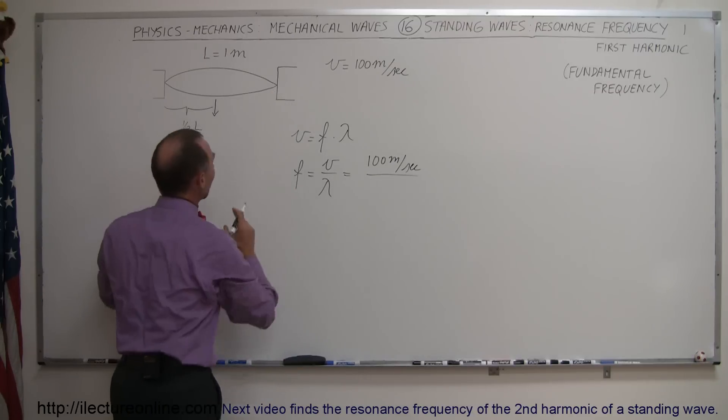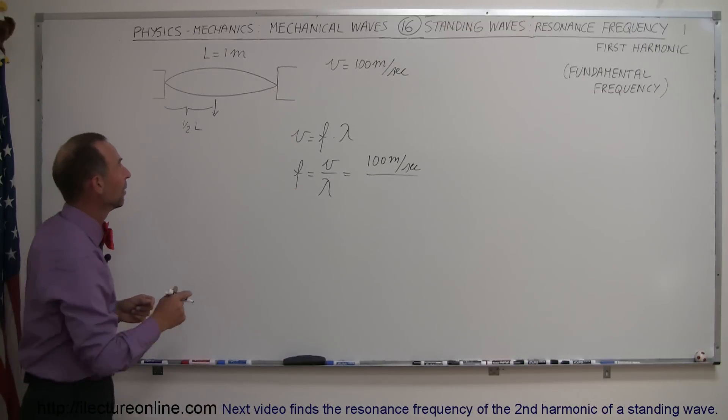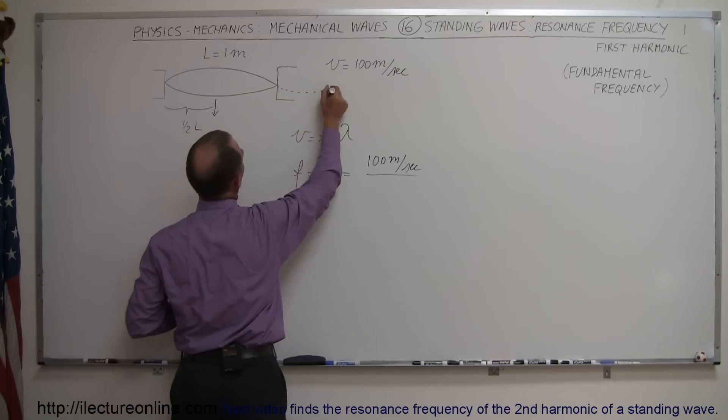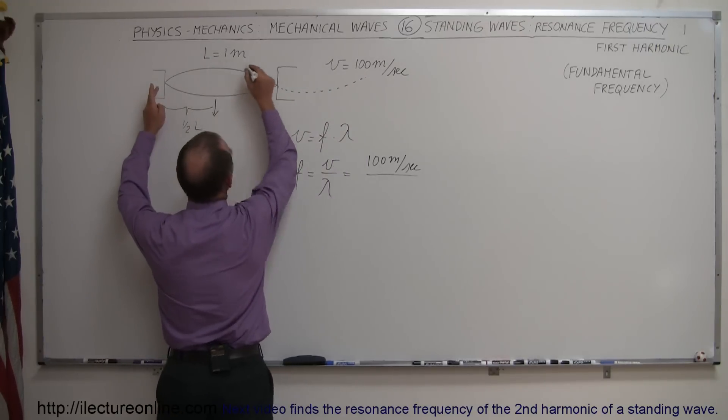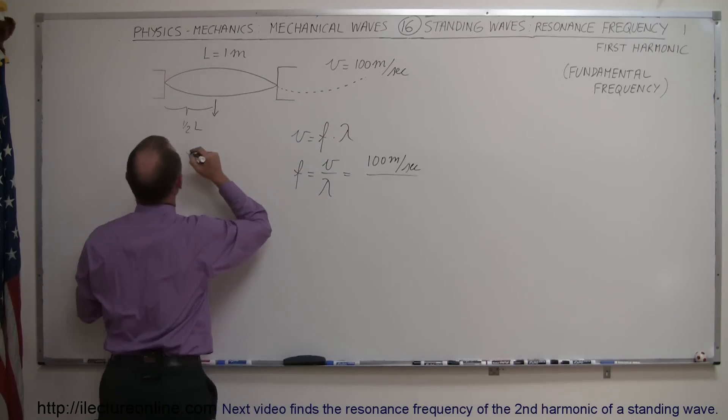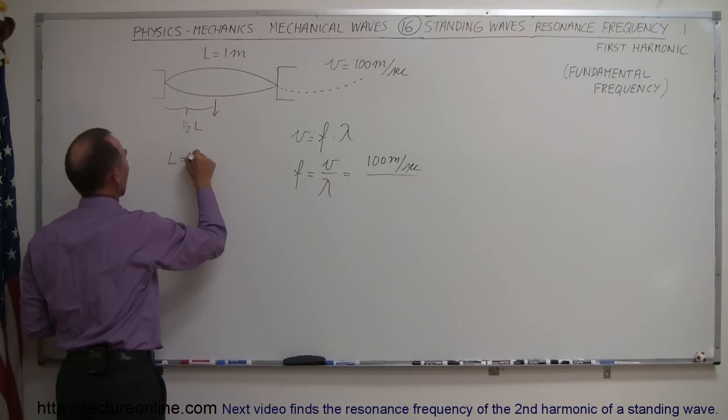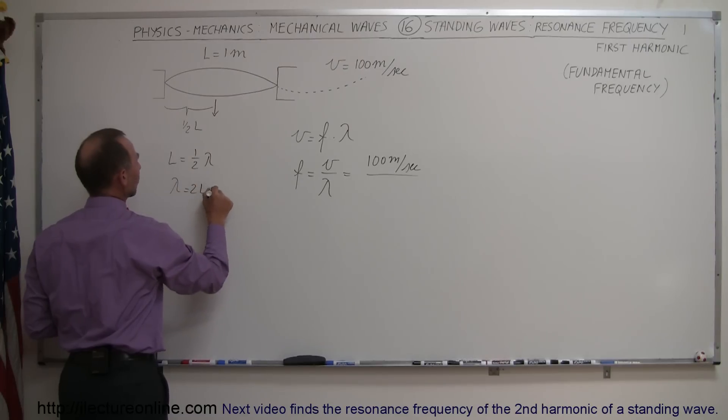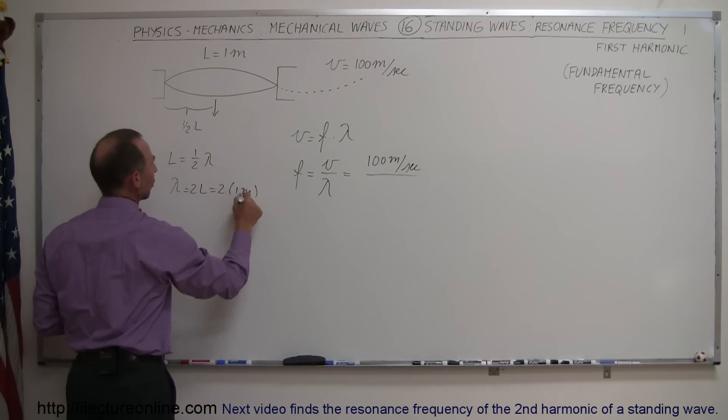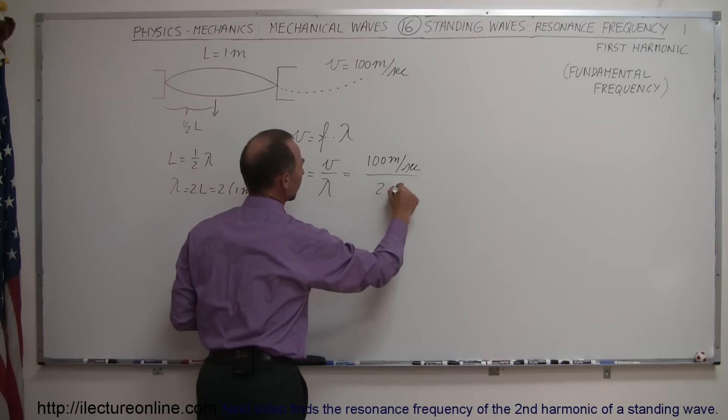Now, of course, we know that this represents half a wave because if you, in your imagination, carry this through like that, you can see that this would be a full wave, so that's half a wave. So we know that L equals half a lambda, or lambda equals twice the length, which is 2 times 1 meter, which is 2 meters.